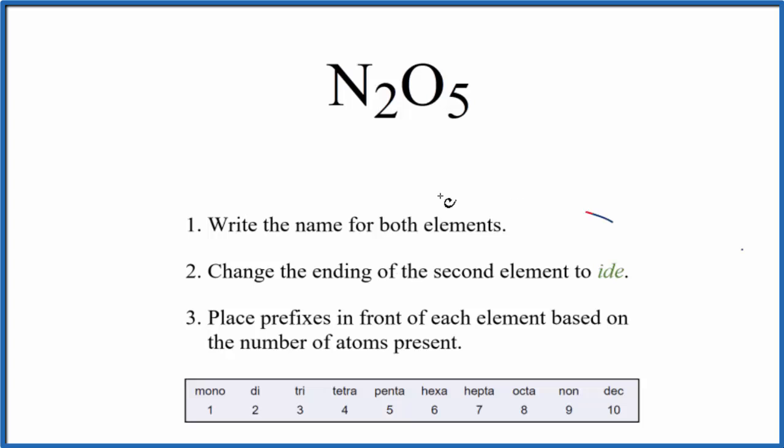So we're going to use these rules here to write the name for N2O5. We first write the name for both of the elements. So we have nitrogen and oxygen.